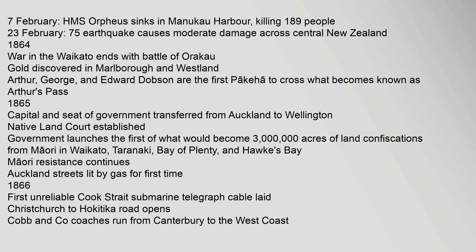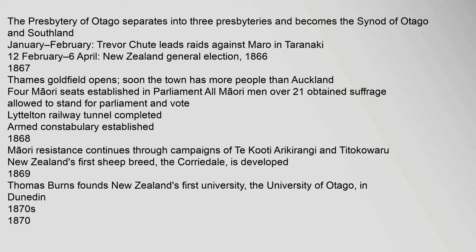Government launches the first of what would become 3 million acres of land confiscations from Maori in Waikato, Taranaki, Bay of Plenty and Hawke's Bay. Maori resistance continues. Auckland streets lit by gas for the first time. 1866: First unreliable Cook Strait submarine telegraph cable laid. Christchurch to Hokitika road opens. Cobb & Co coaches run from Canterbury to the west coast. The Presbytery of Otago separates and becomes the Synod of Otago and Southland.